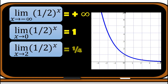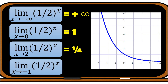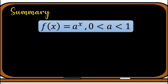The limit of (1/2)^x as x approaches −1: approaching from the left and the right the graph goes to 2, so the limit equals 2. As with the previous example, the last three items can be evaluated using direct substitution — simply plug in the value of x we are approaching. For example, (1/2)^0 = 1, (1/2)^2 = 1/4, and (1/2)^(−1) = 2.